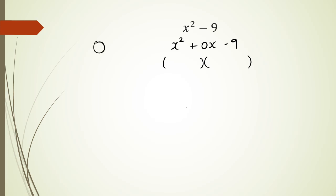what two numbers will multiply to negative 9 and add up to 0.